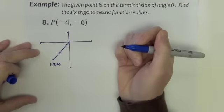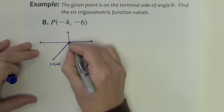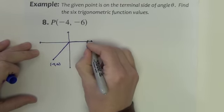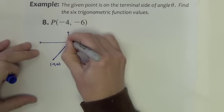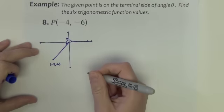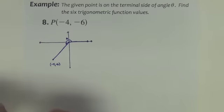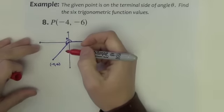So when it says the point is on the terminal side of angle theta, it means there's our angle theta. Now the way that we are going to solve this problem is we are going to create what we call a reference triangle.